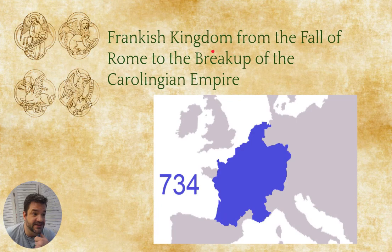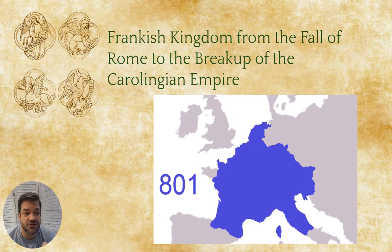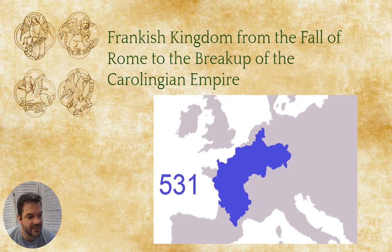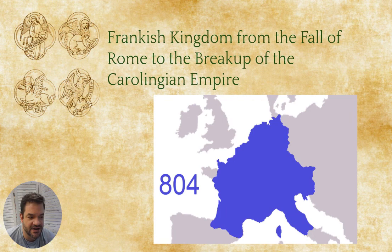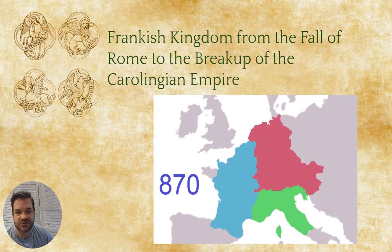The Frankish kingdom runs from the fall of the Roman Empire to the breakup of Charlemagne's kingdom — the Carolingians. Around 800 CE, Charlemagne is crowned emperor of the Romans. He expands his territory, then dies and the kingdom breaks up between his sons — splitting into Germany, France, and northern Italy.